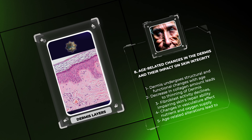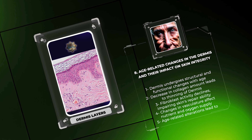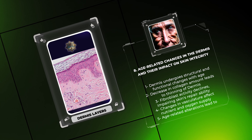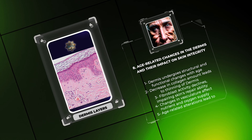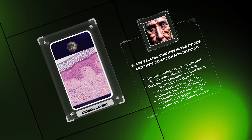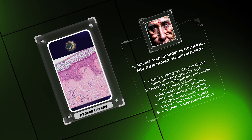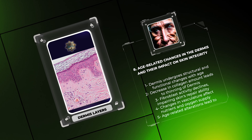The number and activity of fibroblasts — the cells responsible for producing ECM components — decline, impairing the skin's ability to repair and regenerate. Additionally, changes in the vasculature affect nutrient and oxygen supply to the dermis, further compromising skin health.